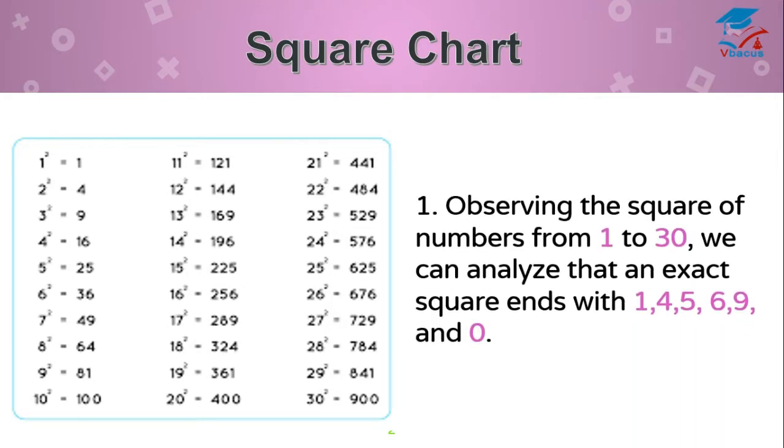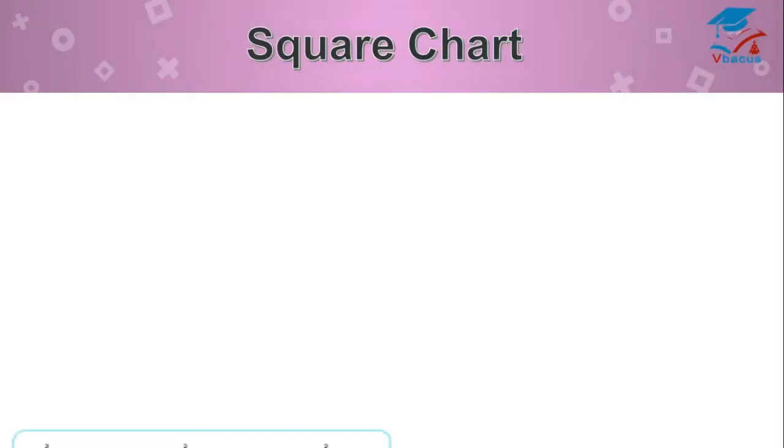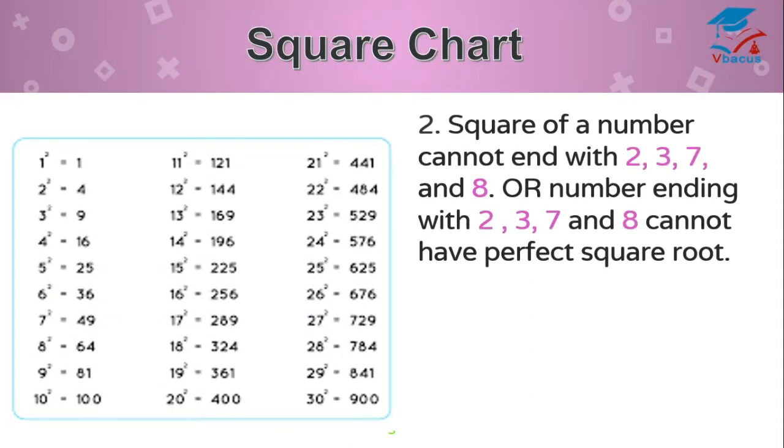Observing the square of numbers from 1 to 30, we can analyze that an exact square ends with 1, 4, 5, 6, 9 and 0. Square of a number cannot end with 2, 3, 7 and 8. You can see, last digit is neither 2, nor 3, nor 7 and nor 8. Any number ending with 2, 3, 7 and 8 cannot have a perfect square root.